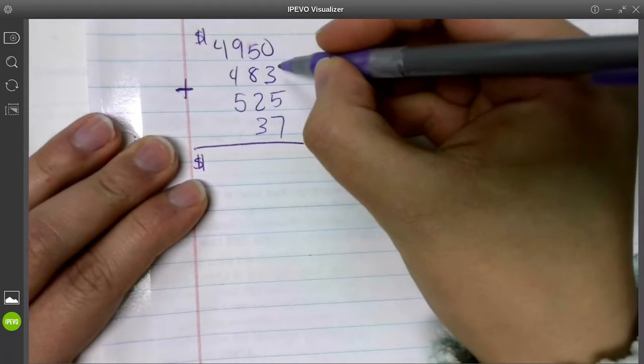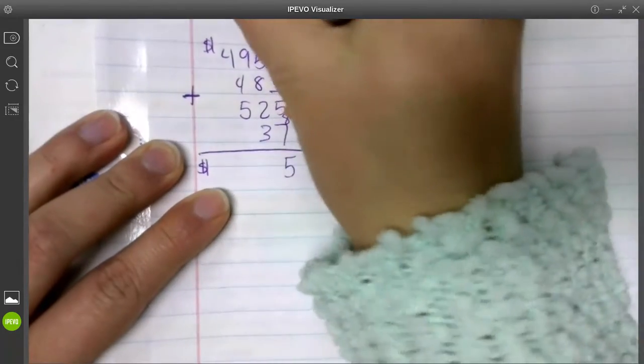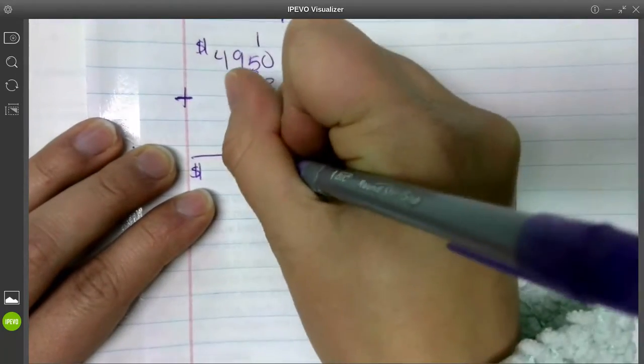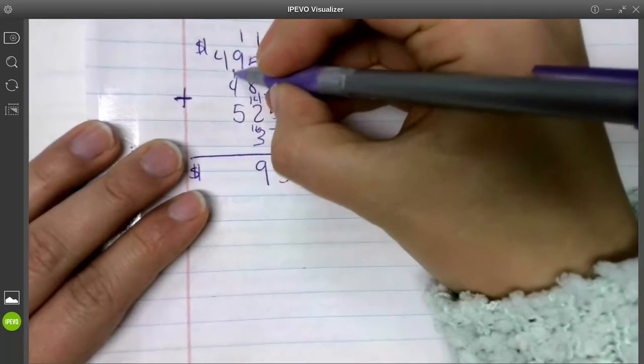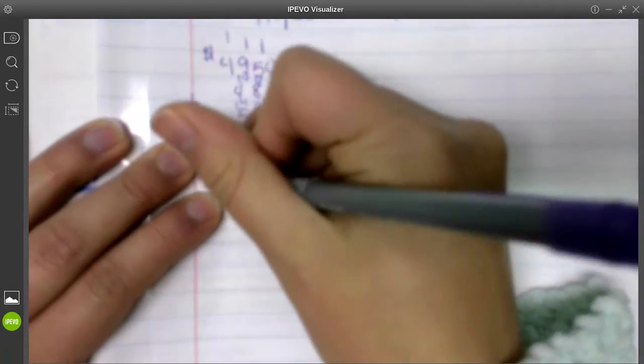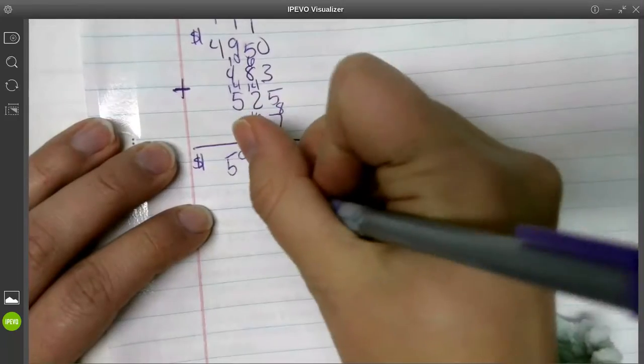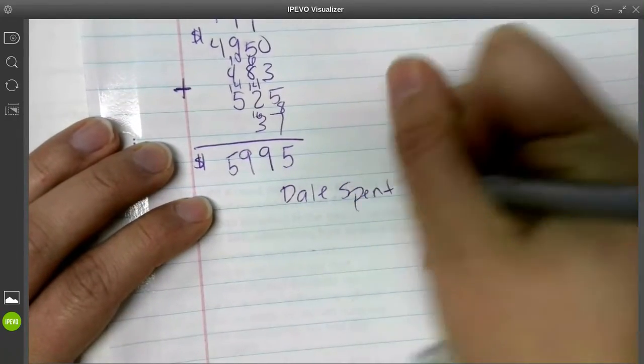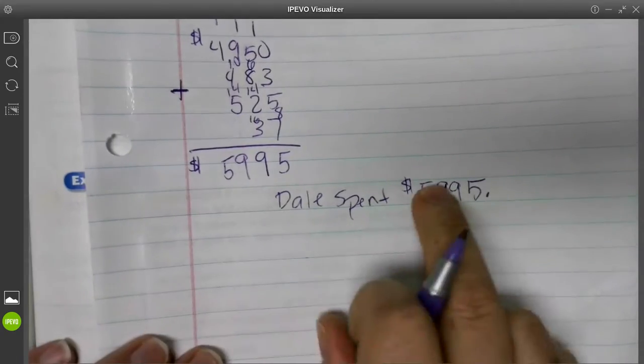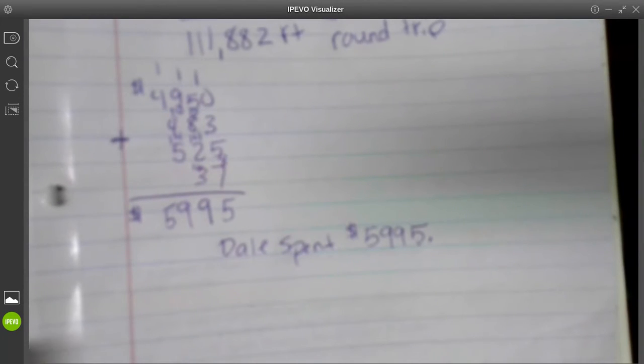All right, so we're going to do some adding again. We start in our ones place over here: zero plus three is three. Three plus five is eight. Eight plus seven is fifteen, so we have our five, then we carry our one. One plus five is six. Six plus eight is fourteen plus two is sixteen. Sixteen plus three is nineteen. We carry our one. One plus nine is ten. Ten plus four is fourteen. Fourteen plus five is nineteen. Carry our one. One plus four is five, and there's nothing else in this column that I have to add. So he spent $5,995. I'm going to write that down. Dale spent $5,995 for his car all together. You can check this by using a calculator to make sure that is correct. So there we go, adding three digits or more numbers.